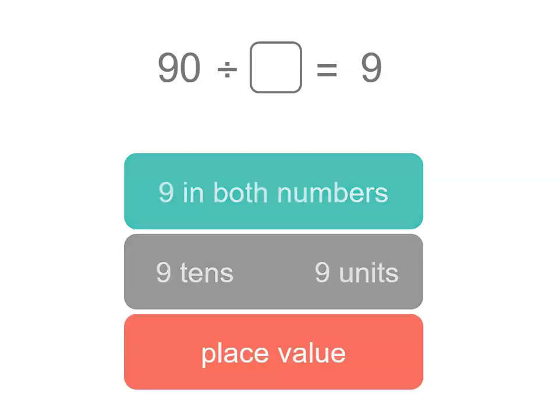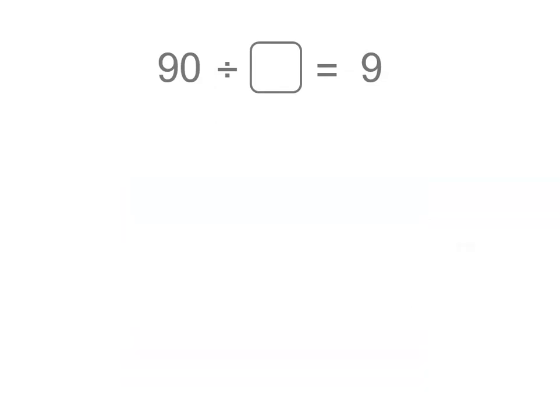So we can think of place value. If we've got 9 tens and then we're comparing it to 9 units, you can see that to have 9 units we would need to divide by 10. When we move to the right in our place value table, it's like dividing by 10. So 90 divided by 10 would give us 9. That makes the statement true.